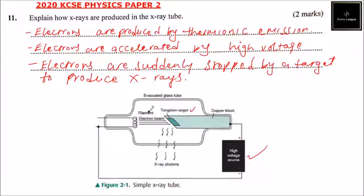This is the evacuated glass tube. So as a result, when the electrons hit the target, x-rays are produced. So that's how the x-rays are produced using the x-ray tube.